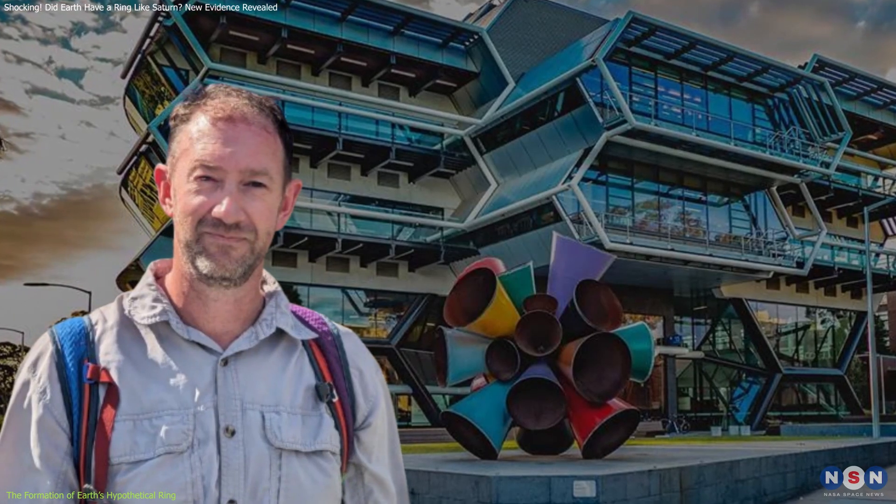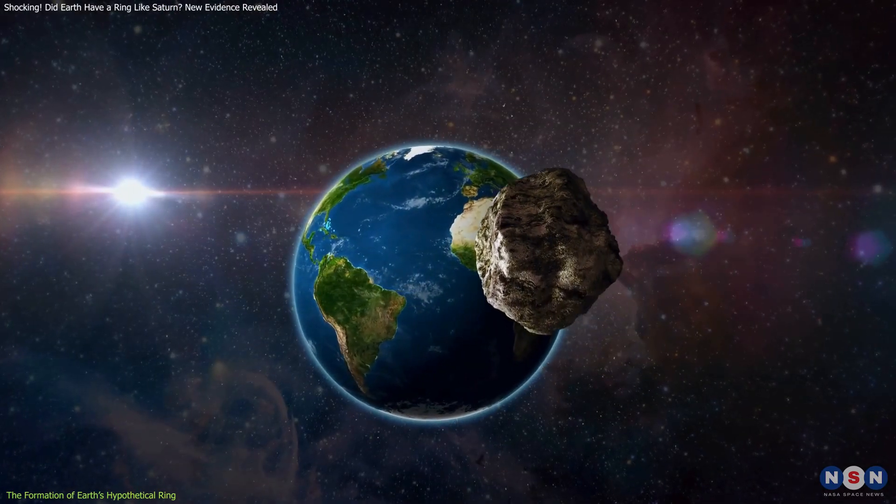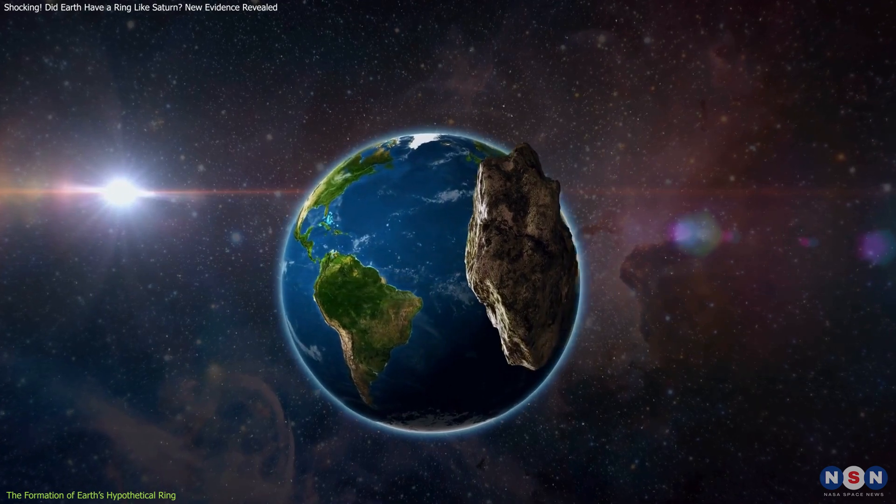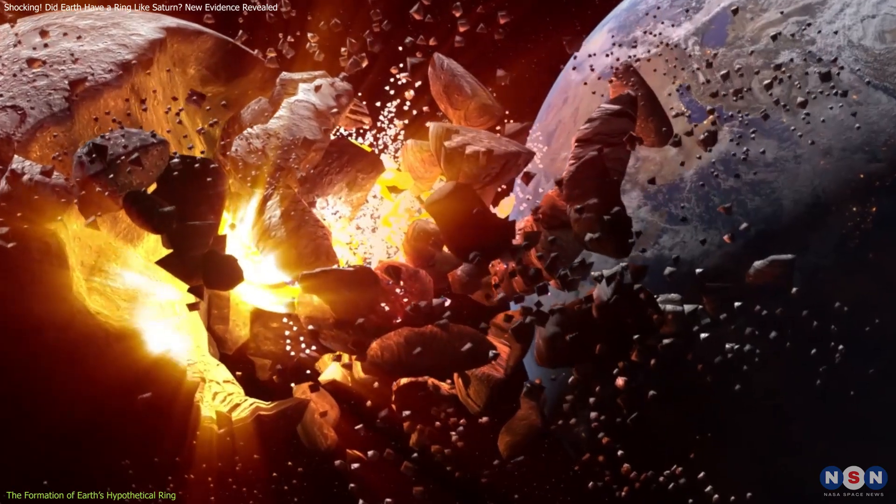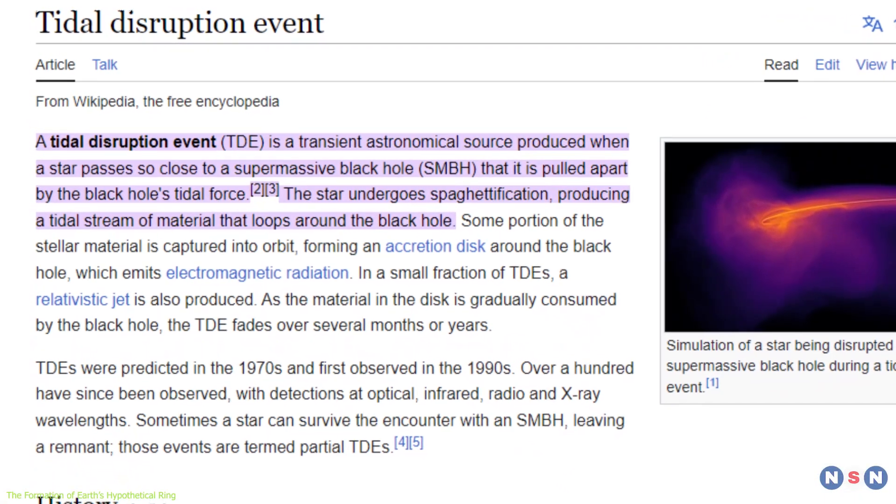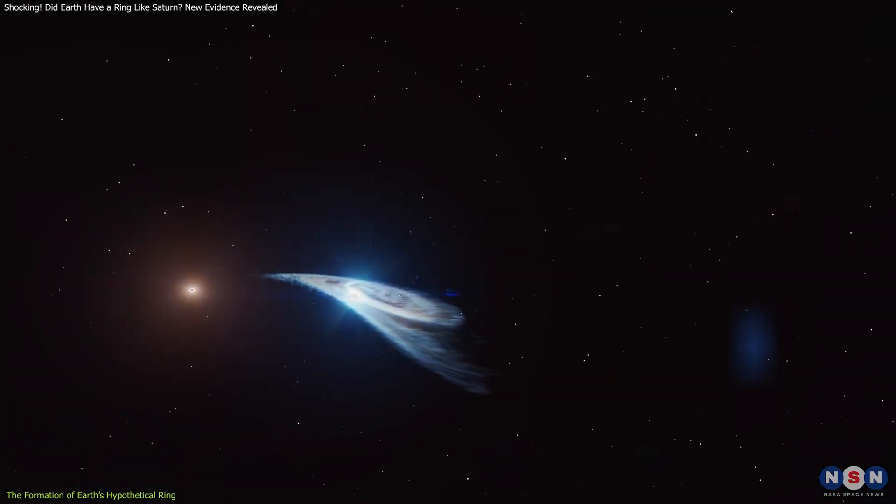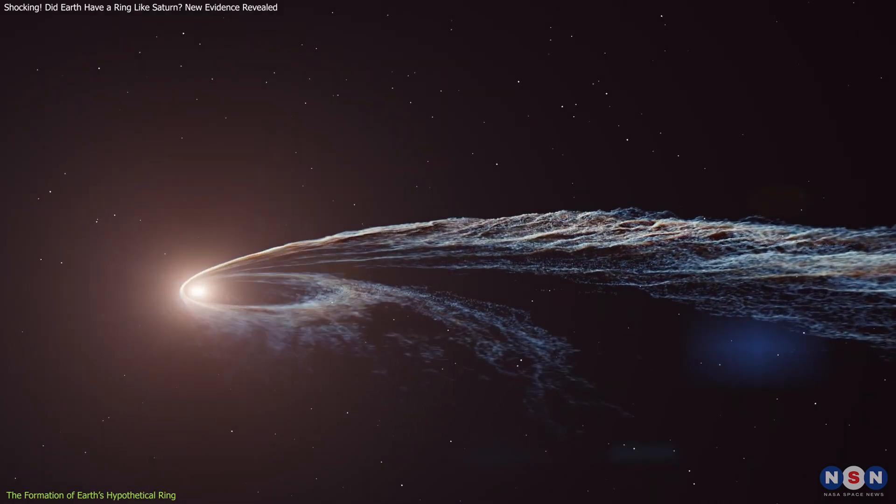Research led by Andy Tompkins at Monash University proposed that an asteroid, possibly over 12 kilometers in diameter, passed so close to Earth that it was torn apart by the planet's gravitational forces. This process, known as tidal disruption, occurs when a celestial body gets too close to another larger body, crossing what is known as the Roche Limit.